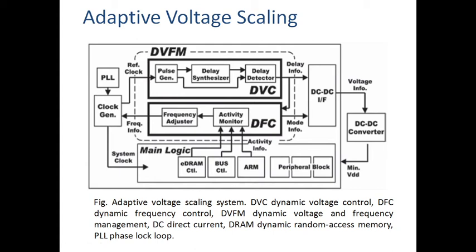According to the delay, it will generate a particular voltage. Dynamic frequency scaling also works according to requirement: the activity monitor gives signals representing how much frequency will be generated, and the frequency adjuster generates the suitable frequency. This is the variable frequency generator; the signal is given to the DC-to-DC converter, which generates the particular voltage according to the signal. This is the entire circuit for adaptive voltage scaling and frequency scaling.